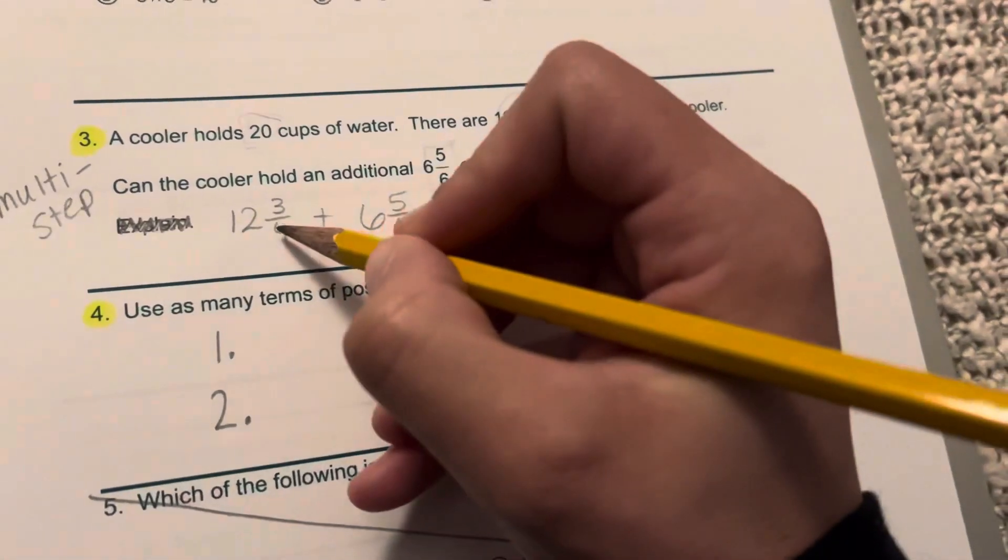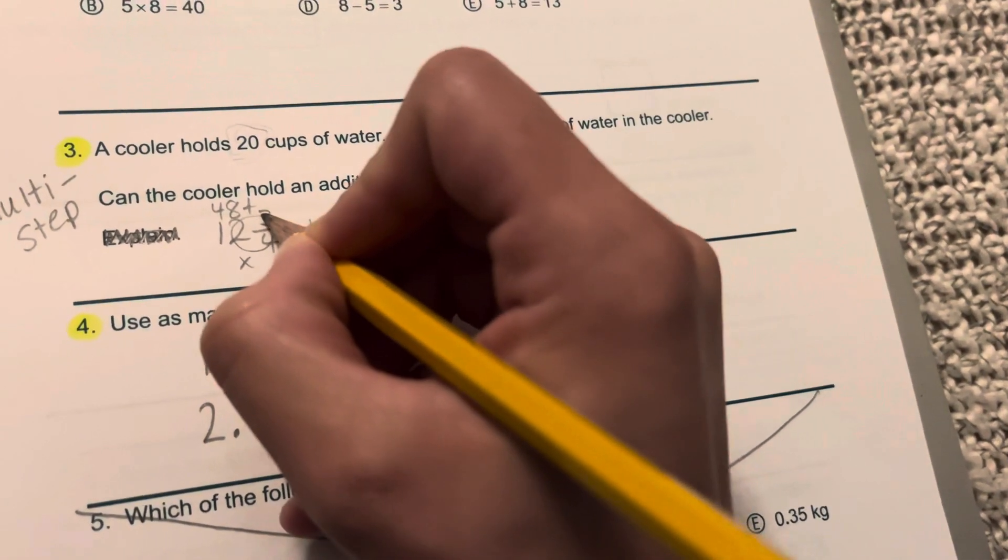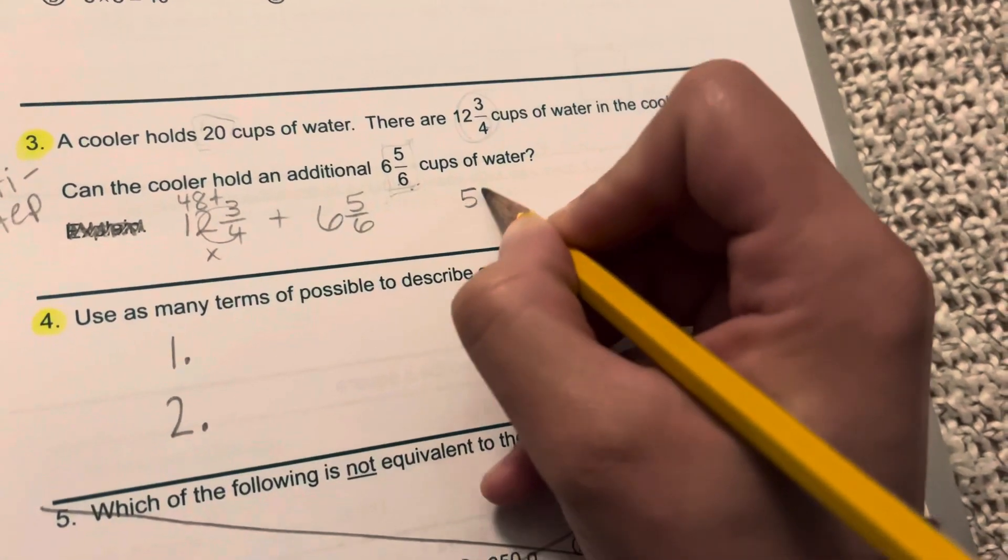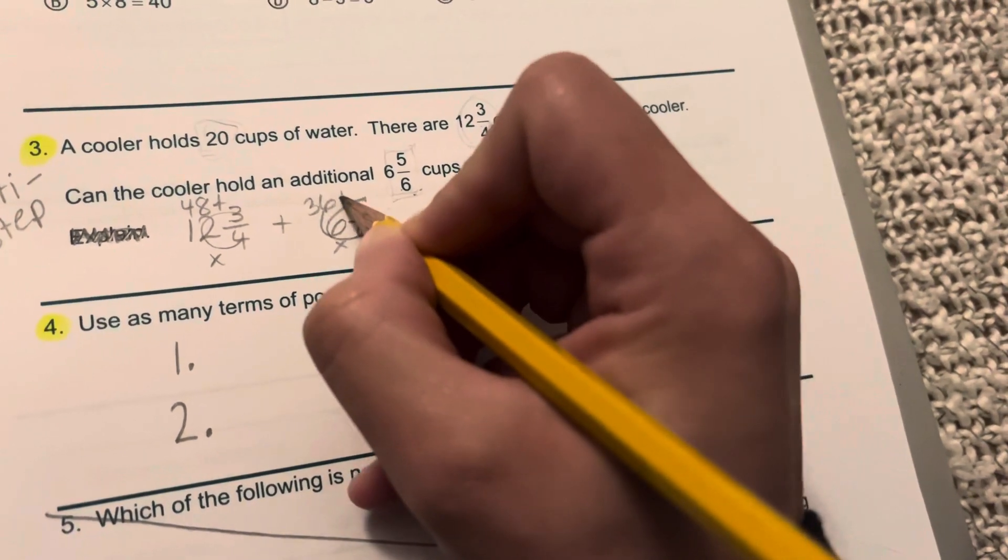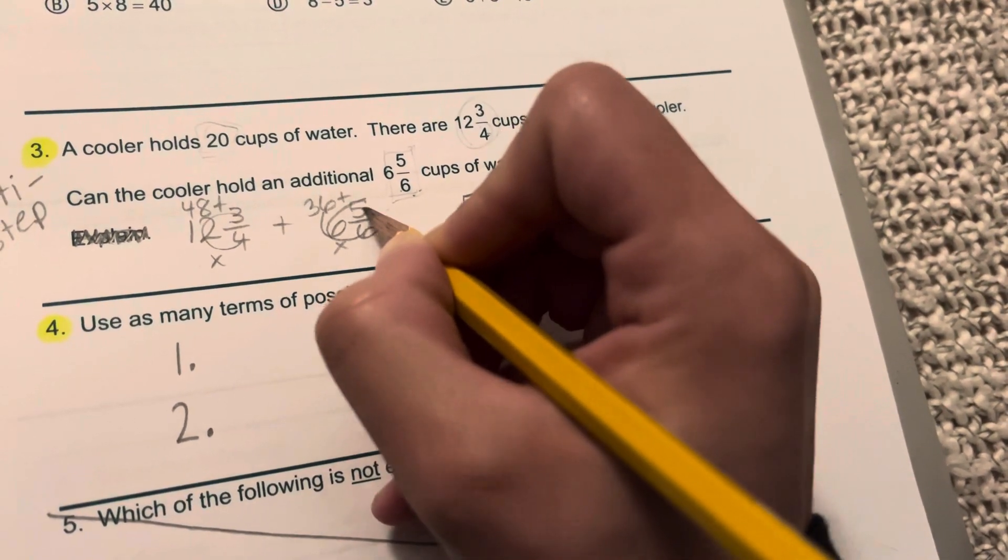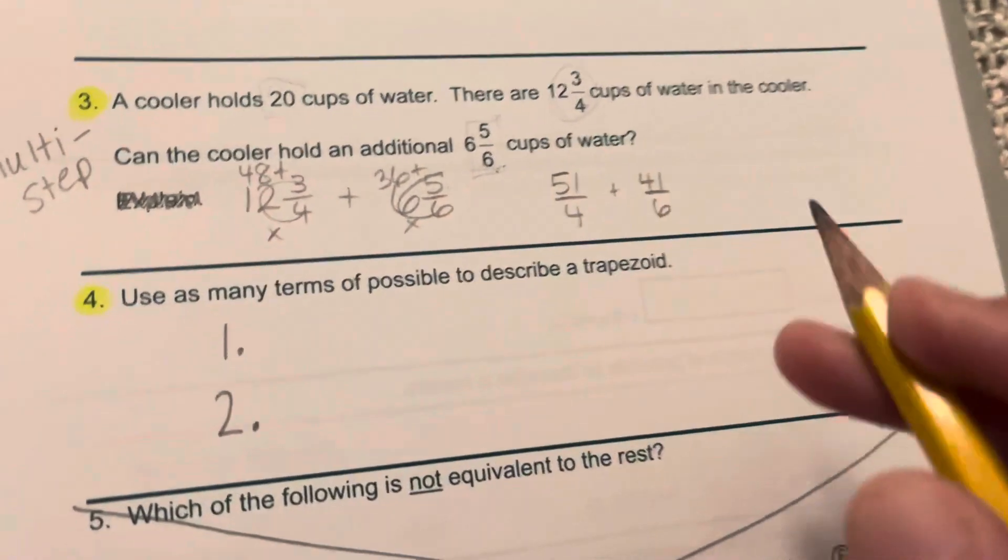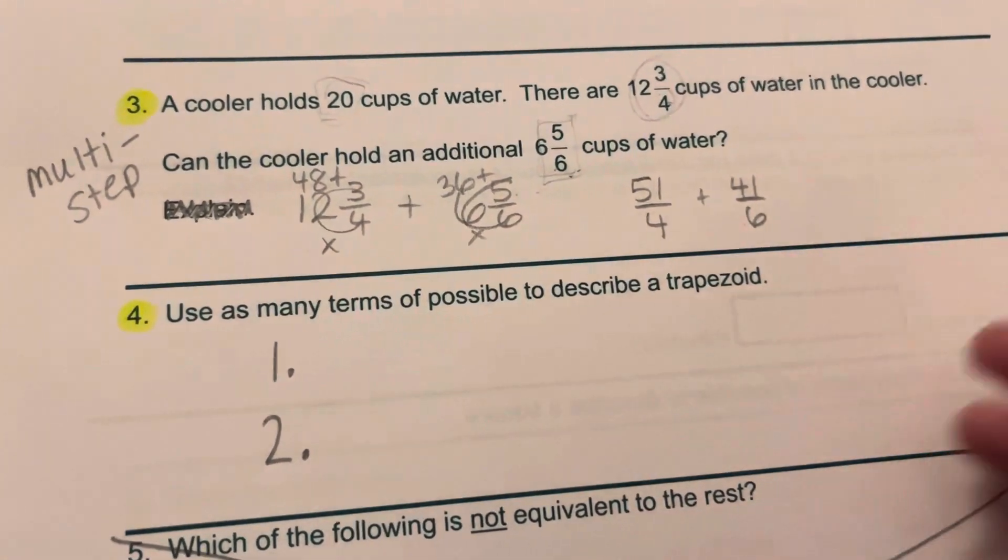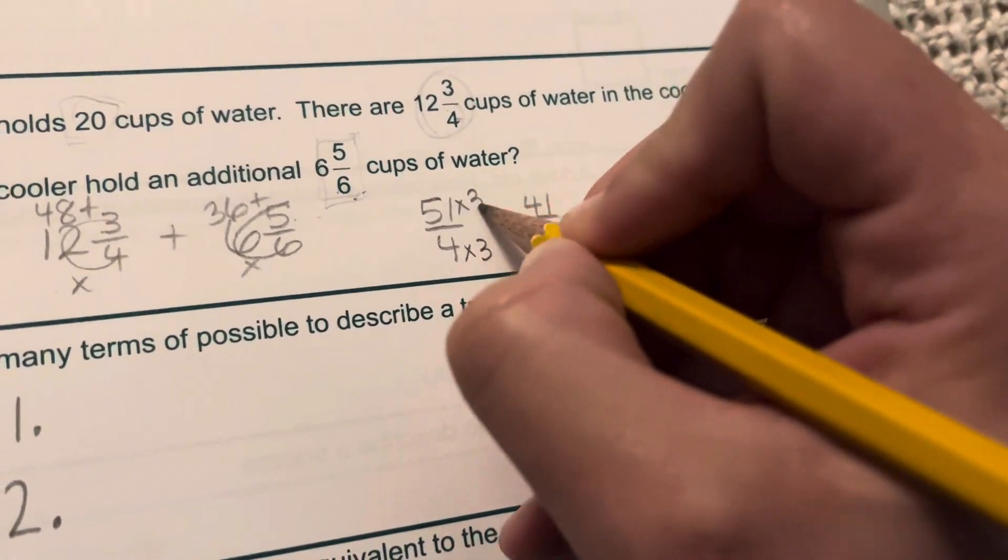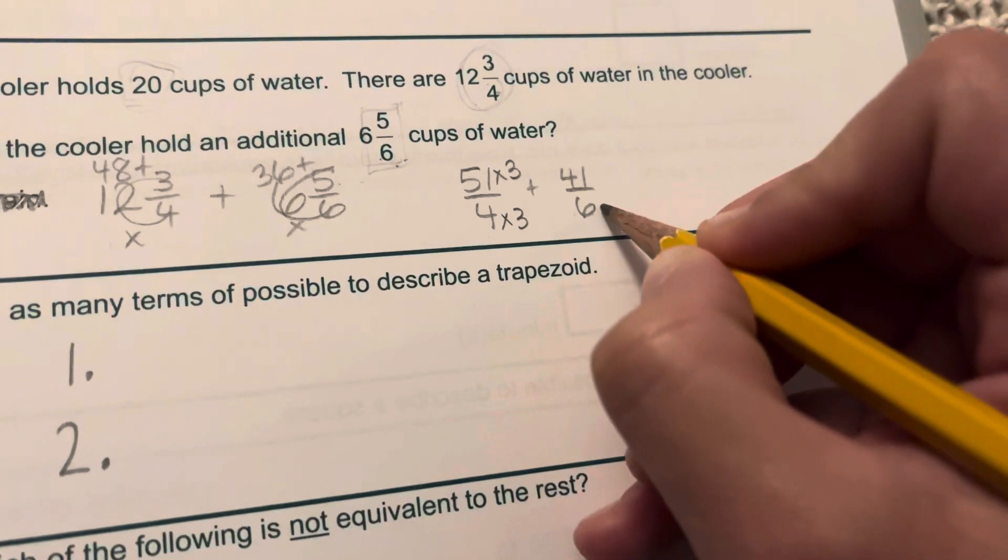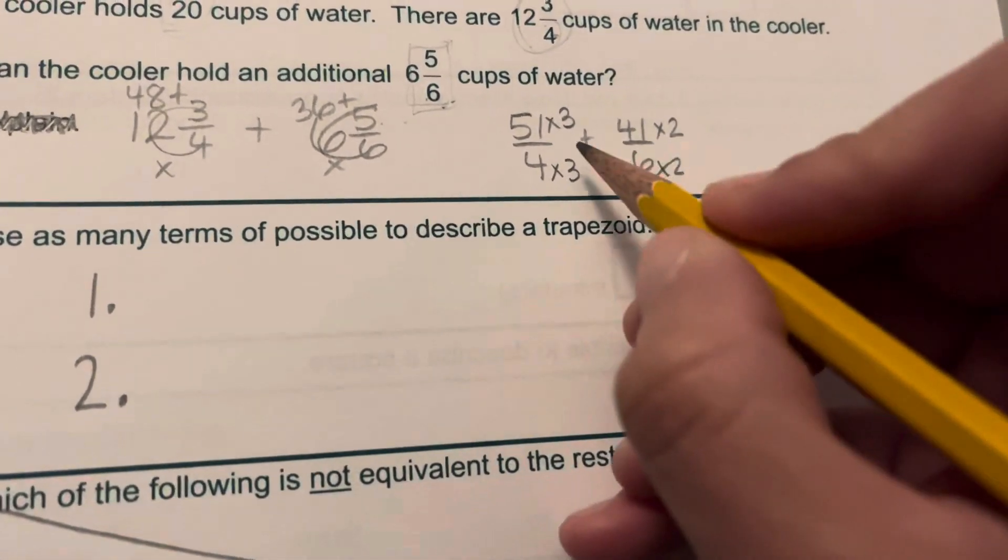Now they're mixed numbers. So I'm going to do the backwards C. I know that 12 times 4 is 48. That's 49, 50, and 51. So 51 over 4. 6 times 6 is 36. That's 37, 38, 39, 40, and 41. So I have 41 over 6. I know between 4 and 6, a common denominator that I could use is 12. So 4 times 3 would get me there. And whatever I do on the bottom, I need to do to the top. And 6 times 2 gets me there. Whatever I do to the bottom, I need to do to the top.